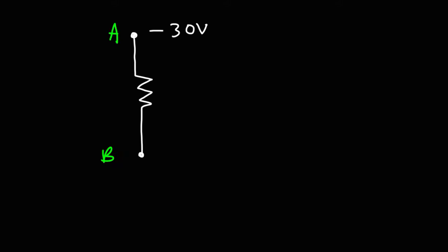Let's use another example. Let's say we have a resistor oriented in this direction. Let's call this point A and point B. The electric potential at point A is negative 30 volts, and the electric potential at point B is negative 12 volts. The resistance is 3 ohms. First, determine the direction of the electric current; second, calculate the electric potential difference between points A and B; and third, calculate the current flowing through this resistor.